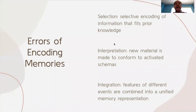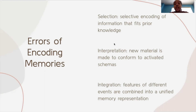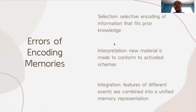When we create memories, we tend to have errors of encoding those memories. One example is selection — the selective encoding of information that fits prior knowledge, revolving around ideas that fit with an appropriate schema. Another example is interpretation, where new material is made to conform to activated schemas, with an activated schema from an experience influencing how we interpret that specific experience. A third example is integration, where features of different events are combined into a unified memory representation.